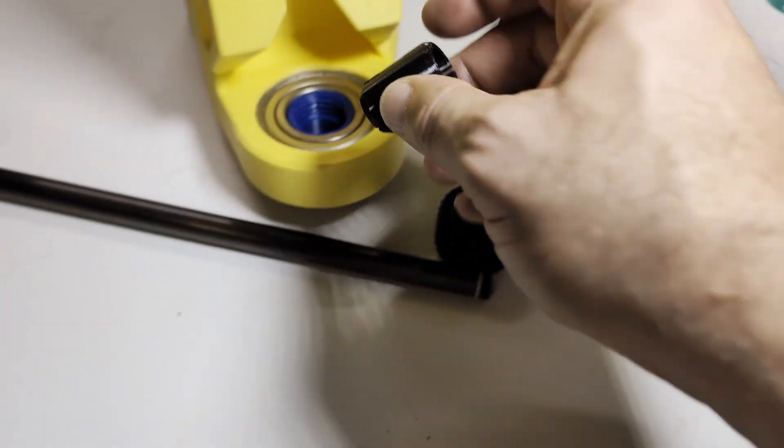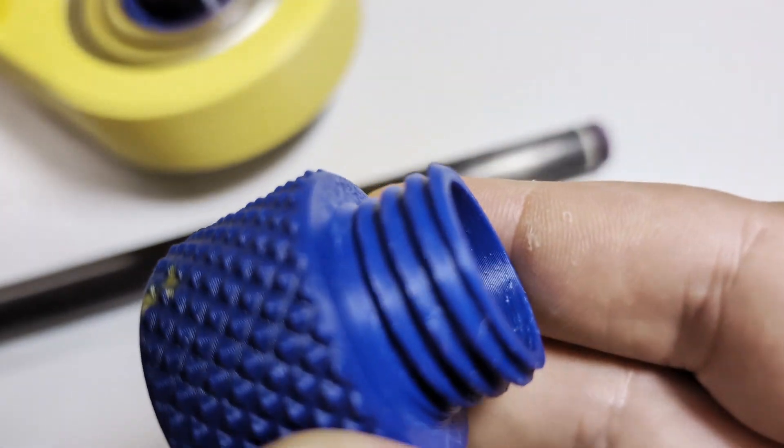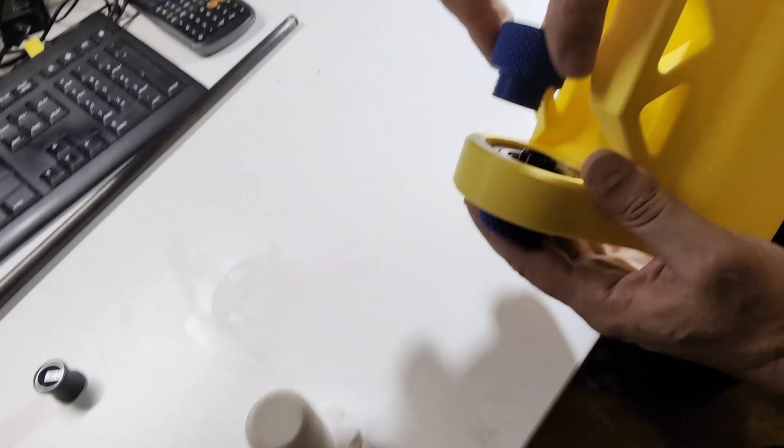Both ends are conical and slotted, so it adapts to a wide range of diameters. The clamping screw tightens everything safely.